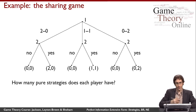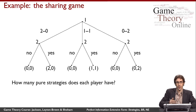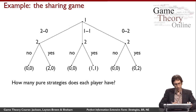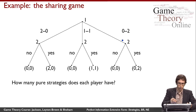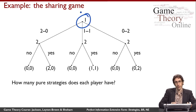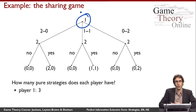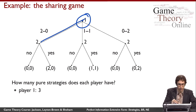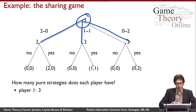I want to ask you to think about how many pure strategies each player has in this game. We'll start by thinking about player one. Player one is easy because there's only one choice node for player one, and so player one has the three pure strategies that you would expect: taking this action, this action, and this action.